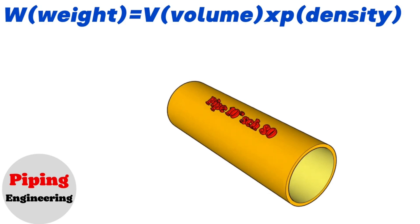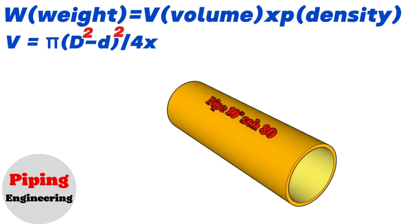To calculate the volume we will use this formula: Volume equals π multiplied by, in brackets, the squared outside diameter minus the squared inside diameter, divided by 4, multiplied by the length of the pipe. This formula applies to all pipe sizes.